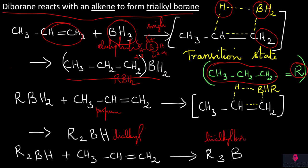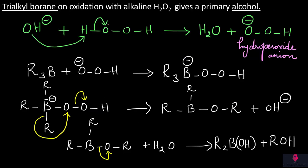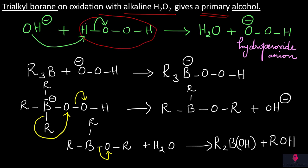In the first step, trialkyl borane is prepared by electrophilic addition across the double bond. In the second step, trialkyl borane undergoes oxidation with alkaline hydrogen peroxide to give a primary alcohol — this is against Markovnikov's rule. Alkaline conditions use NaOH, which removes H+ from H2O2 to form the hydroperoxide anion (–OOH).